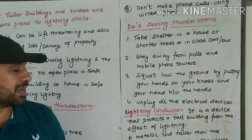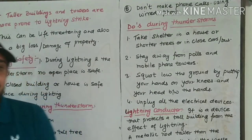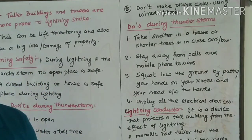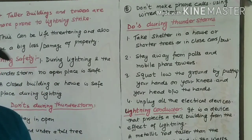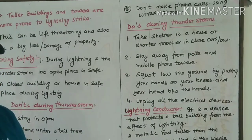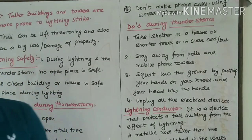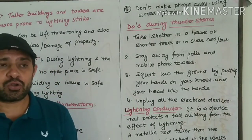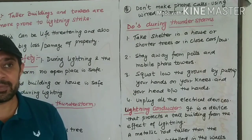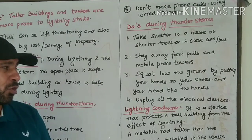Stay away from poles and mobile phone towers during a thunderstorm. Number three, squat low on the ground. Take a squat position — place your hands on your knees, keep your head down, and stay low. This is called the squat position.